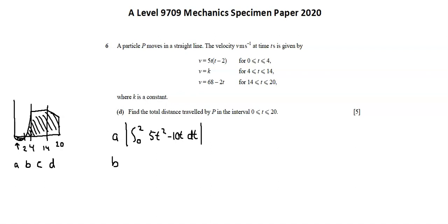Here, from 2 to 4, the function 5t squared minus 10t with respect to t. C, the area of the rectangle. The rectangle has a base from 4 to 14, which is 10. And the height we previously identified as 40.